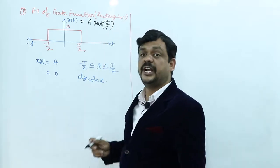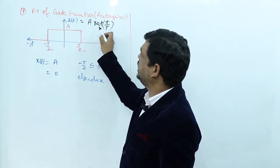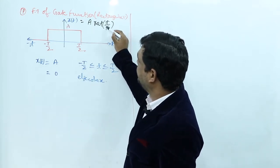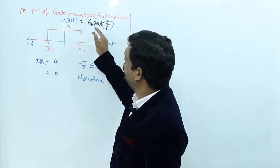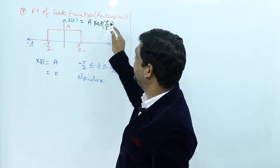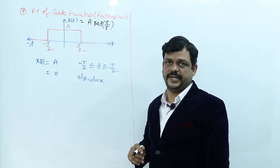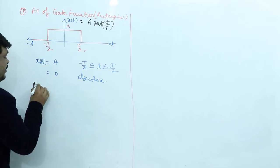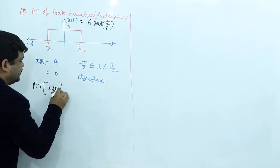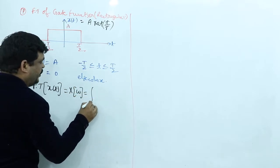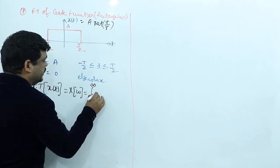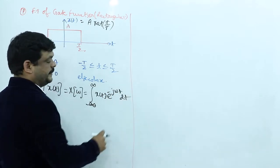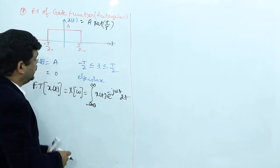The standard representation of the rectangular function is x(t) = A · rect(t/T), where rect denotes the rectangular function, T is the time period, and A is the maximum amplitude. The Fourier transform X(ω) is defined as the integral from minus infinity to plus infinity of x(t) · e^(−jωt) dt. Now substitute x(t) into this standard Fourier transform formula.